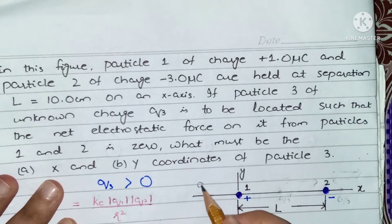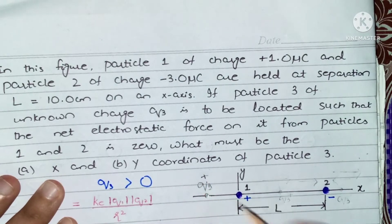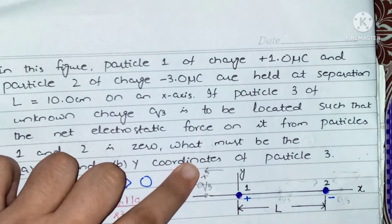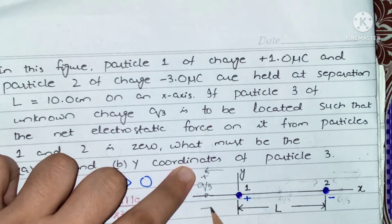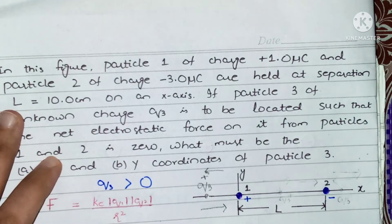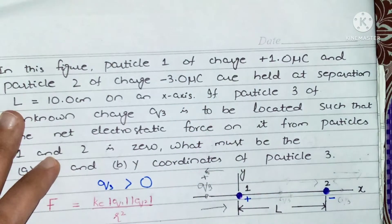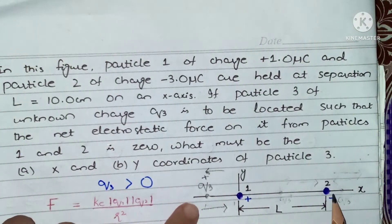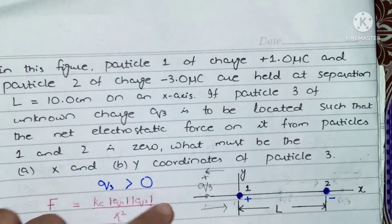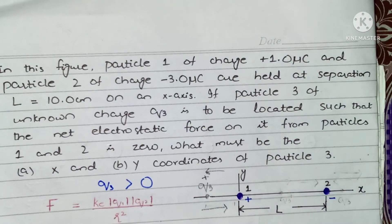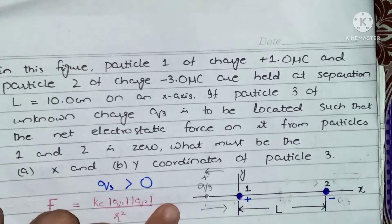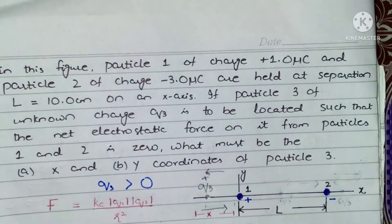Now let us assume q3 is placed to the left of charge 1. Being positively charged, charge 1 repels q3 to the left. Charge 2 is negative and attracts q3 to the right — these forces are in opposite directions. Although the magnitude of charge 1 is smaller than charge 2, the distance between q3 and charge 1 is smaller, which could produce a larger force, so the forces could cancel here. Let us call this unknown distance x.